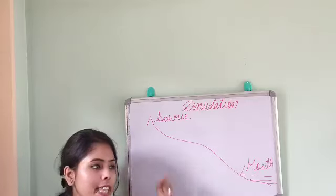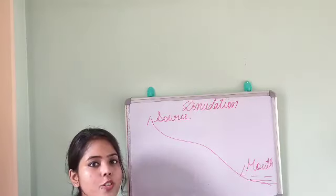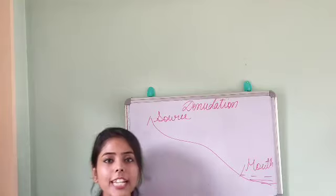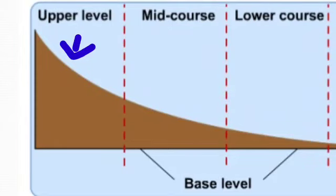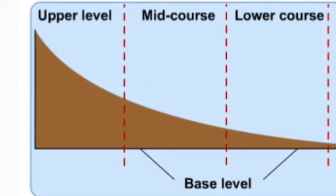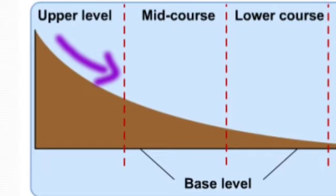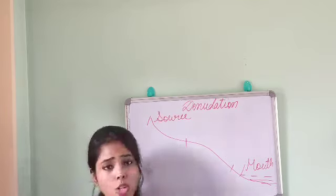The whole stretch from the originating point to the meeting point is known as the river profile. This river profile is divided into three parts: one is the upper course, second is the middle course, and the last one is the lower course. The upper course is when the river is flowing through the mountainous region — at that time the river has more energy and the power of erosion is also greater.